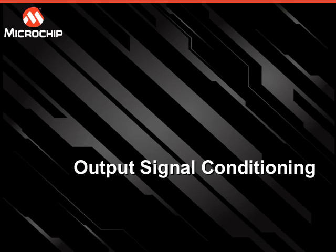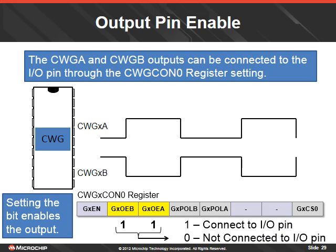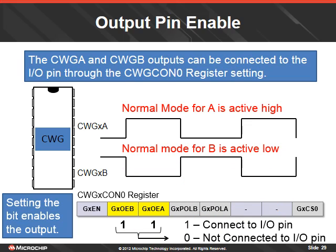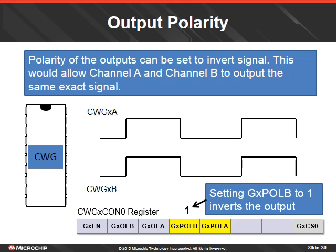Other options exist to modify the output waveform. To output the CWG signals on the IO pins, the CWG-A and CWG-B outputs need to be connected to the IO pins through a bit setting in the CWG control 0 register. Setting the bits to 1 will enable the CWG-A output on the IO pins. The normal mode for signal A is active high, and the normal mode for signal B is active low. Polarity of the outputs can be set to invert the output signal, allowing channel A and channel B to output the exact same signal. The CWG polarity bits in the CWG control 0 register set the waveform as normal mode or inverted mode, with a bit for each waveform.